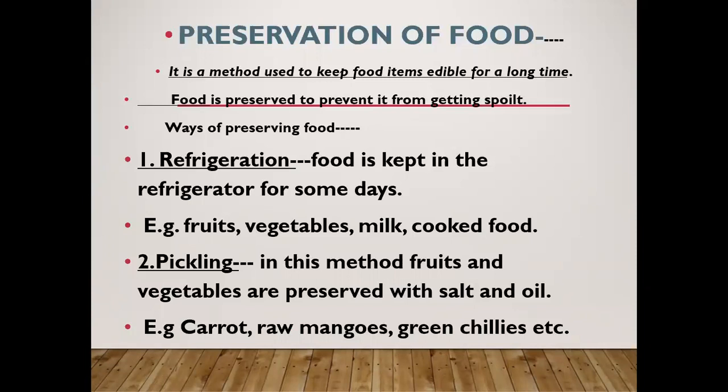The second method is pickling, in which fruits and vegetables are preserved with salt and oil. Carrot, raw mangoes, and red chillies are all preserved by pickling.